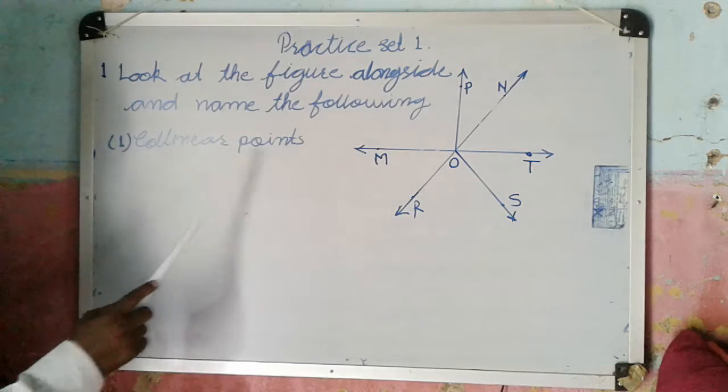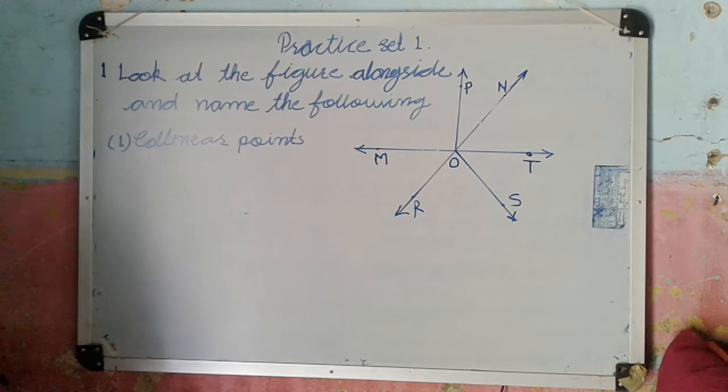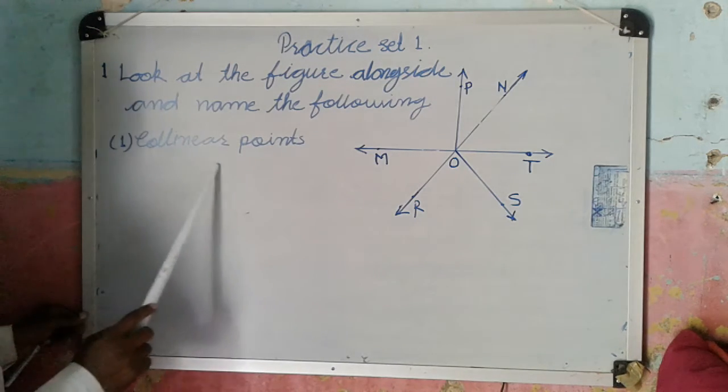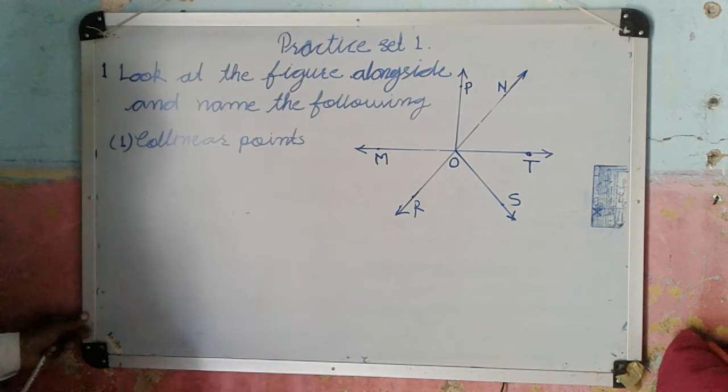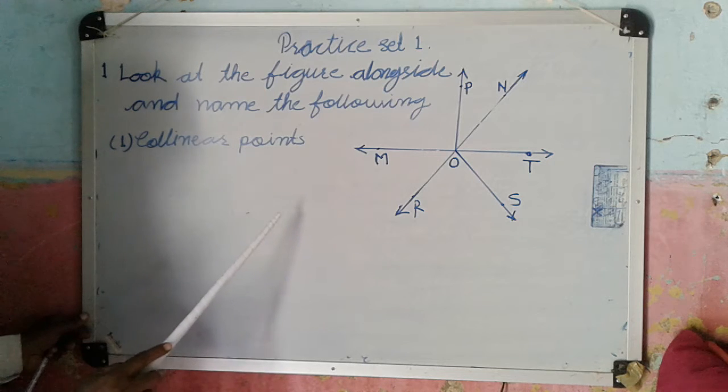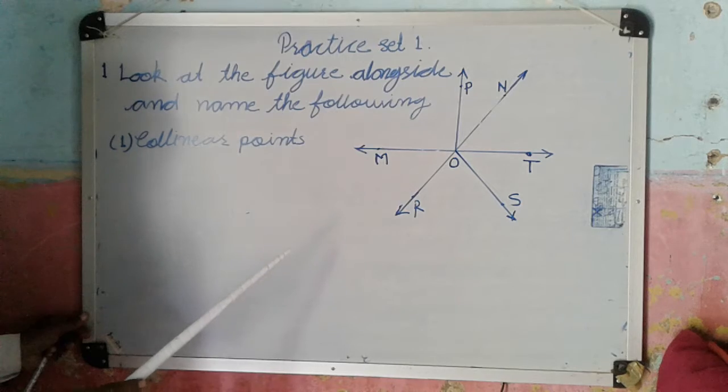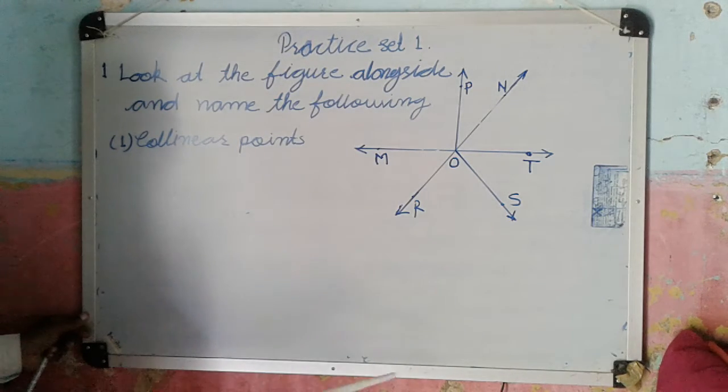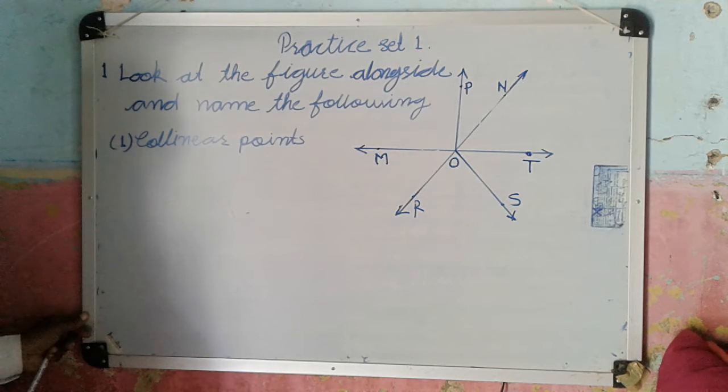First is collinear points. We have to name the collinear points from this figure. Now first you should know what is meant by collinear points. Collinear points means the points which lie on one line are called collinear points.